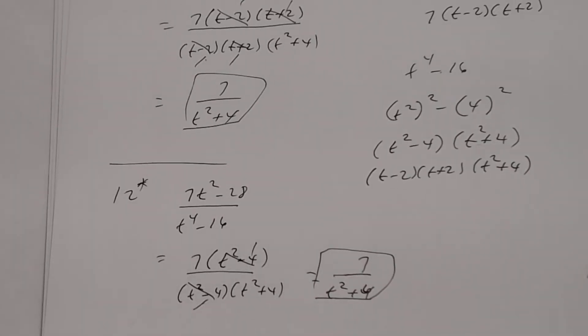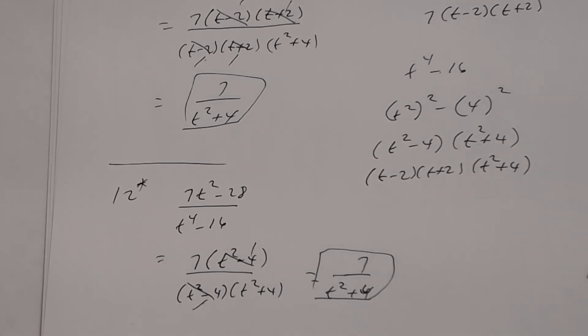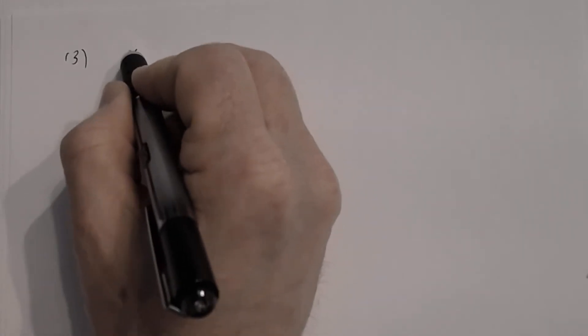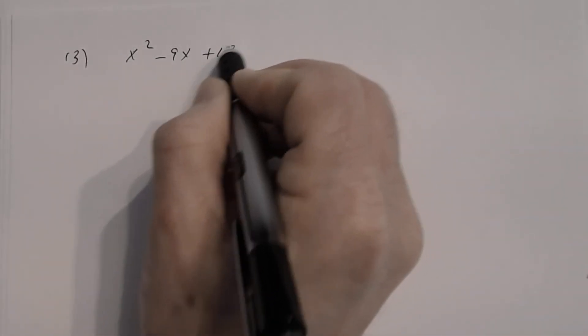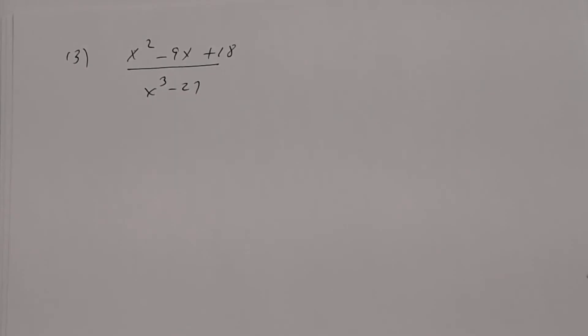Let me do one more — number 13 — and then we'll end this lesson. Between this lesson and the previous one, you should have enough examples to understand how to simplify rational expressions. Number 13: (x² − 9x + 18) divided by (x³ − 27).